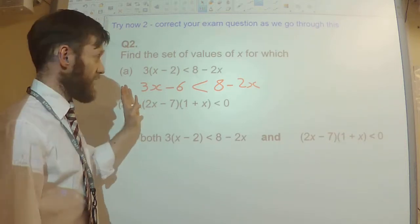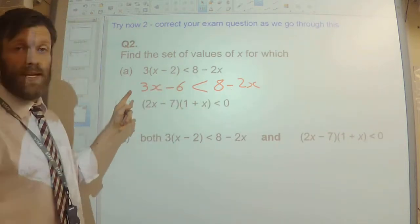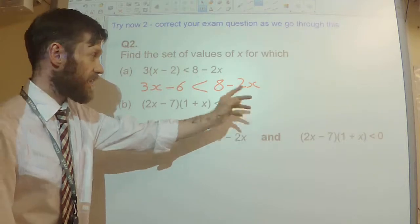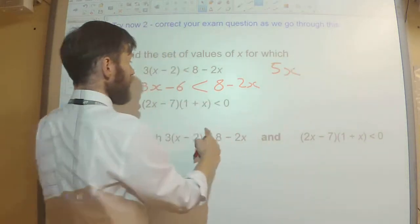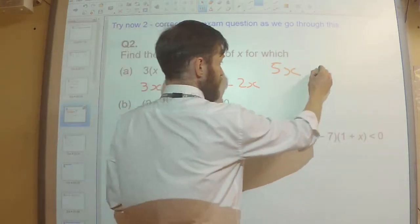Next, put all of the x's on one side of the inequality and all the numbers on the other side. So bring the 2x over here, I'll get 5x. Take the 6 over there and I'll get 14.